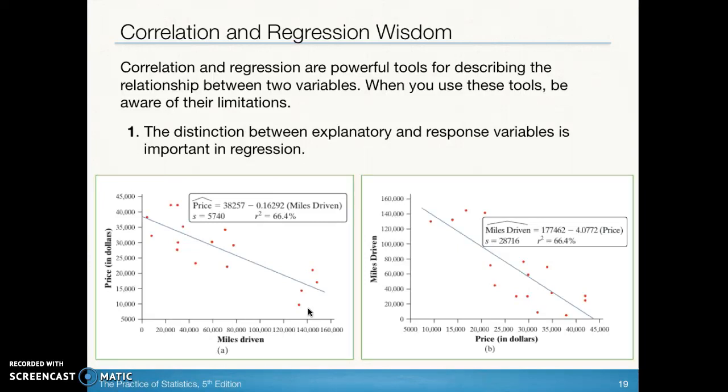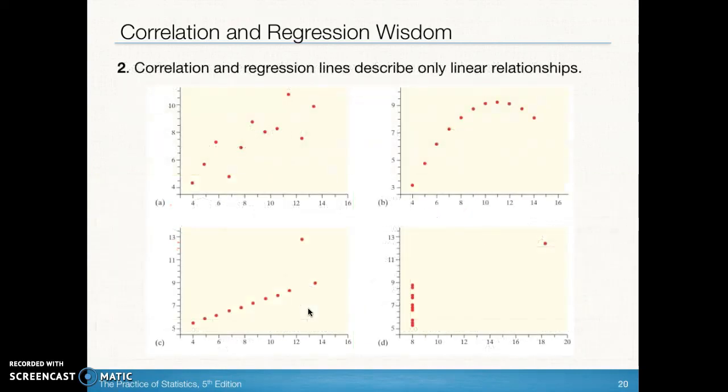We need to be very conscious of which one we're assigning to explanatory and which one is response and know that even though our r will not change if we reverse them, our equation will change. Our residuals will change and therefore our standard deviation of the residuals will also change. The next thing that we need to remember is regardless of what value we end up with for r and r squared, until we actually look at the shape of the data we cannot say whether the relationship is strong or whether the pattern is linear. We really need to look at the data. There's no substitute for graphing the scatter plot.